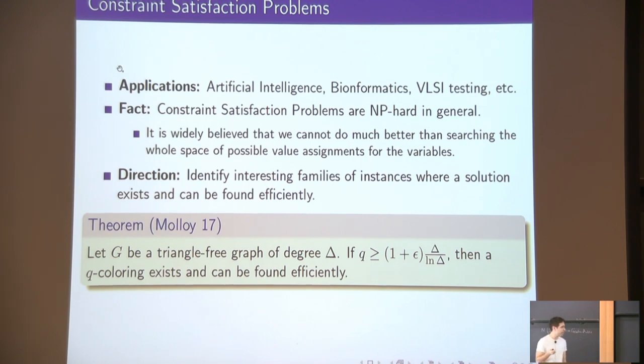This is interesting because the naive bound, the easy bound for a graph of degree delta is to use delta plus one colors. And Molloy's result goes way beyond, and as we will see later, it can do much more.